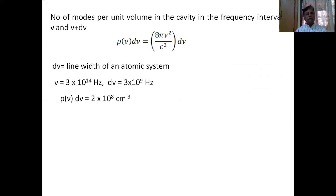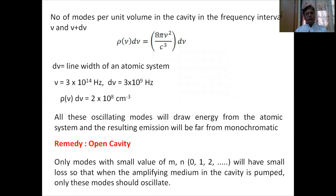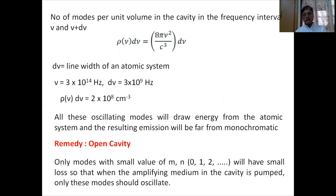The way out is to use an open cavity instead of a closed one. If we remove the side walls, modes having large M and N values — which correspond to propagation far from the propagation axis — will not be reflected back and will be lost. Only modes with small M and N and large Q will survive, meaning propagation close to the axis.